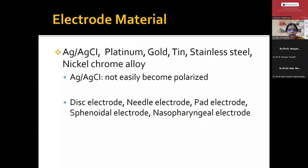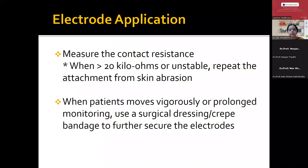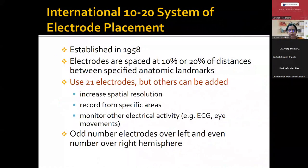Whenever using electrodes — the electrodes are made of usually silver chloride, which are non-polarized. We can use disc electrodes, needle electrodes, or pad electrodes, but most of the time we use cup electrodes. Electrode application is very important — we should always measure the contact resistance once we apply the electrodes. With prolonged monitoring when the patient moves, we use a crepe bandage around the head so the electrodes do not come out.